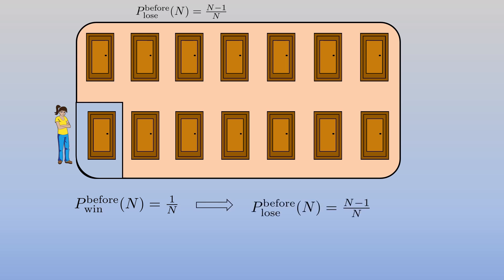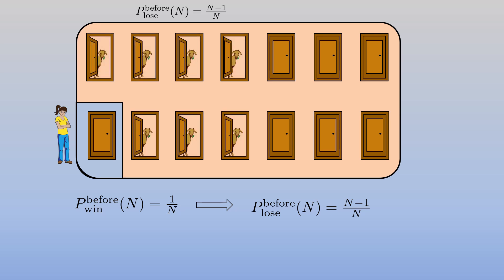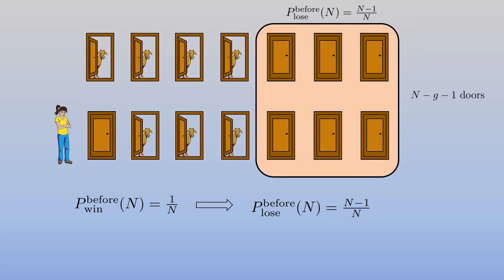When G goats are revealed, N minus G minus one doors will remain. And the chance of having the car behind one of these doors is equally distributed among these doors. Therefore, if you switch the door, the chance of winning would be N minus one over N times N minus G minus one. Here in this final equation, if we set N equal to three and G equal to one, which is our first problem, we will get two thirds, which is equal to the answer we found earlier.